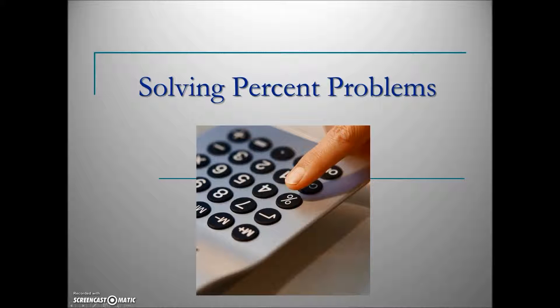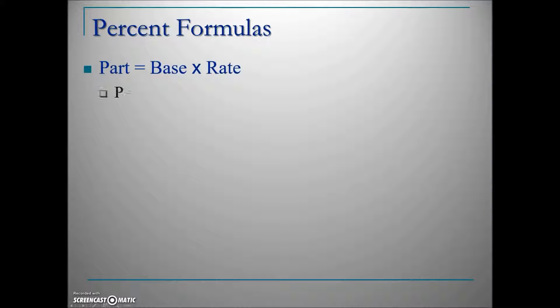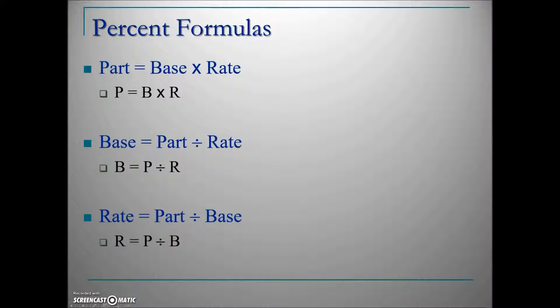Now that we can identify the three components, let's look at solving percent problems. Here are the three formulas: To solve for part, take base times rate (P = B × R). To solve for base, take part divided by rate (B = P ÷ R). To solve for rate, take part divided by base (R = P ÷ B). In any percent problem, they must give you two of the three components to solve it.